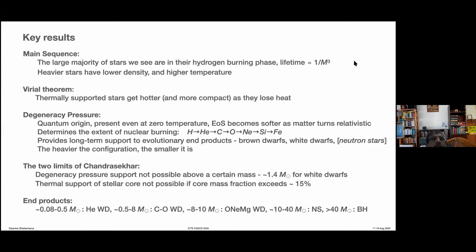The lifetime of the sun in the hydrogen burning phase is about 10 billion years. For example, 10 times the mass of the sun will have a lifetime of about 10 million years. So massive stars evolve very quickly — they live a much shorter time. These collection of stars burning hydrogen are called the main sequence. Heavier stars on the main sequence have actually lower density but much higher temperature — they are more distended with higher surface temperatures.